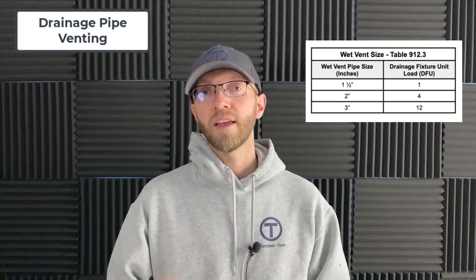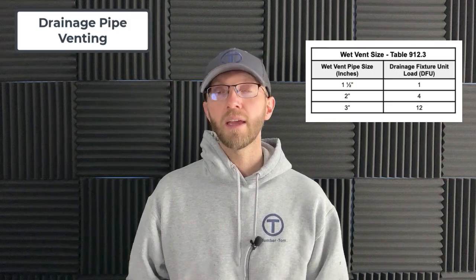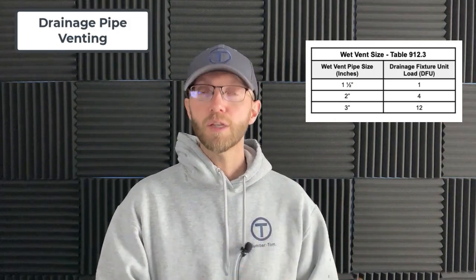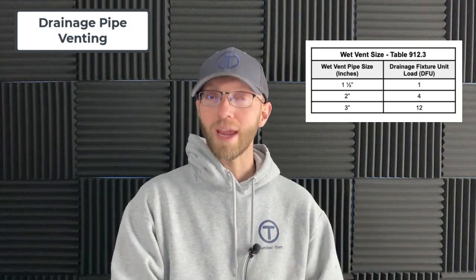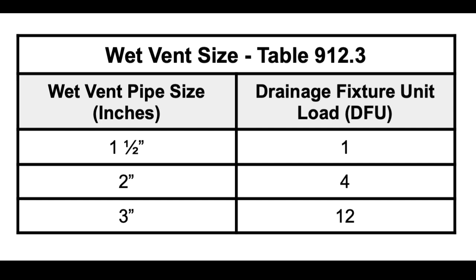Let's jump to the International Plumbing Code, table 912.3. This table gives us the adjustments and limits on drainage fixture units for each pipe size, ensuring enough airflow inside that size of pipe when used as a vent. The wet vent pipe size column includes one-and-a-half inch, two inch, and three inch. One-and-a-half inch pipe is allowed one drainage fixture unit, two-inch pipe is allowed four drainage fixture units, and three-inch pipe is allowed 12 drainage fixture units.